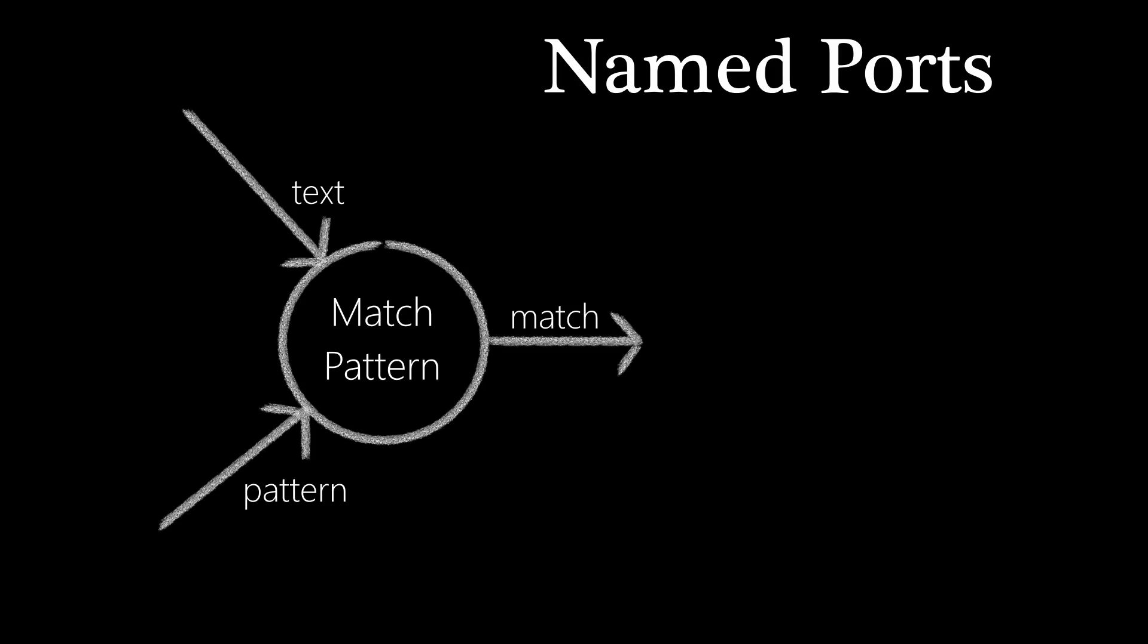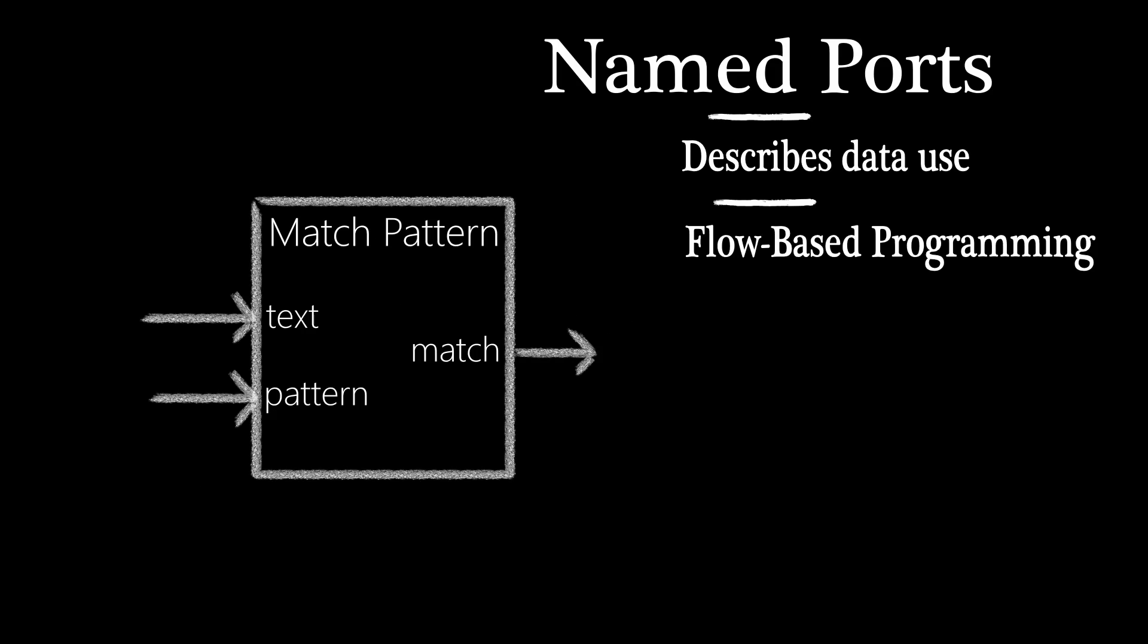When a node needs multiple data to perform its job, we can name the port to distinguish it from all others. The name describes how the data will be used. Often, implementations with named ports will use rectangular nodes that look very much like integrated circuits in the schematics.